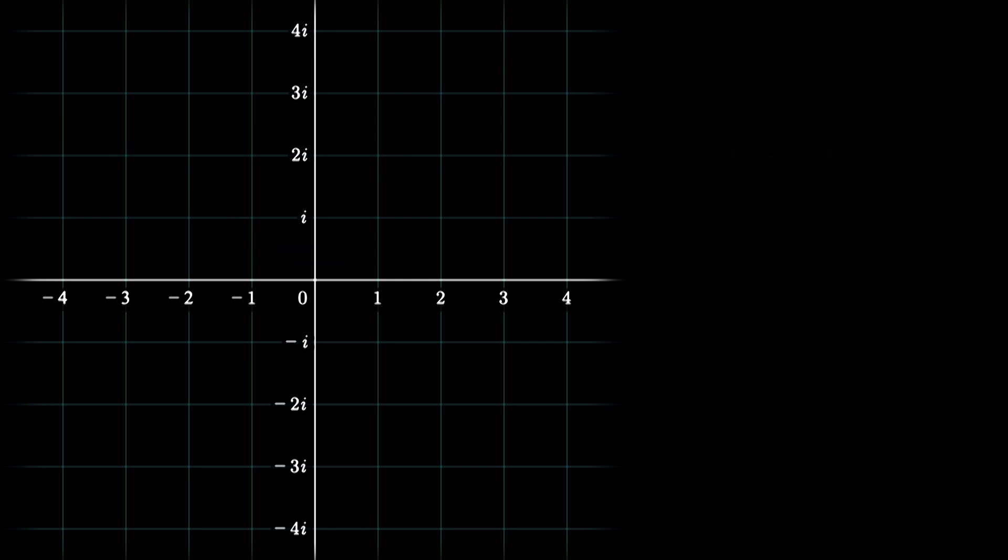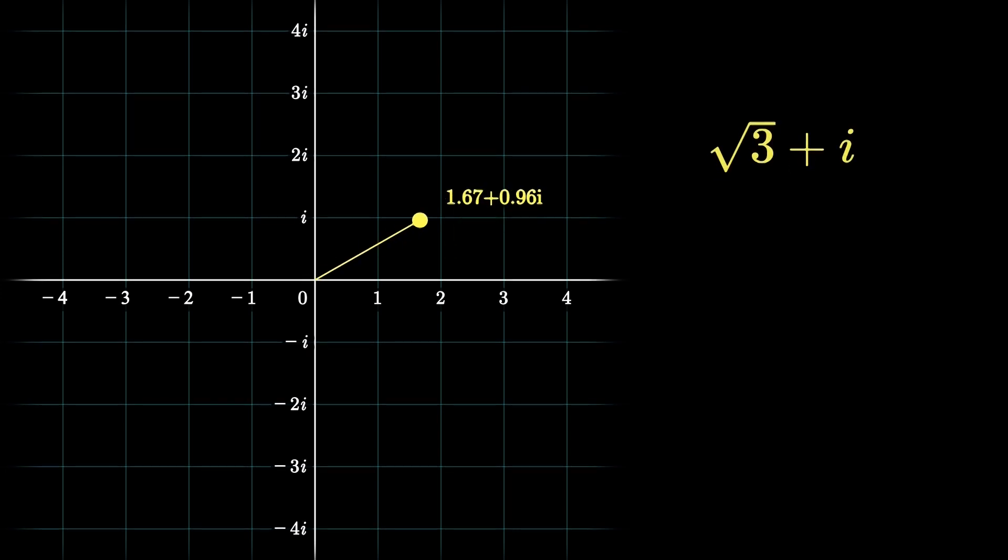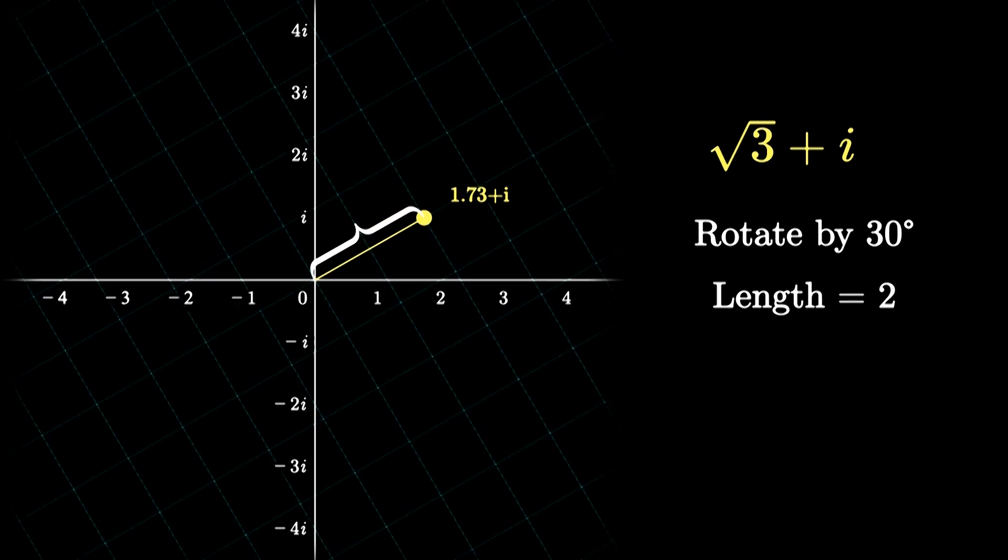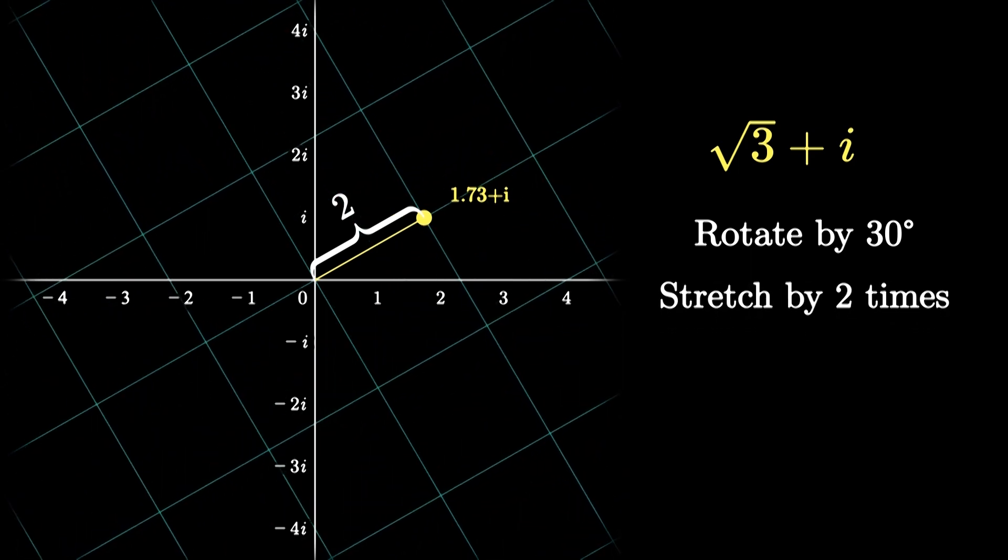Whoa, let's try this again with a different number. This time let's multiply by square root of 3 plus i. This number initially makes 30 degrees with the real axis, so multiplying by this number will be the same as rotating the number by 30 degrees. And since the length of this number from the origin is 2, multiplying any number by this number will also result in stretching that number by 2 times.